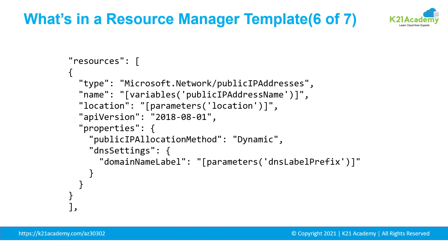As the resource type changes over time, the API version refers to the version of the resource type you want to use. As a resource type evolves and changes, you can modify a template to work with the latest features whenever you're ready. For example, this one shows the 2018 API version. If new features were implemented with API version 2019.1001, in the future you just need to update the API version so your deployment uses the new version.